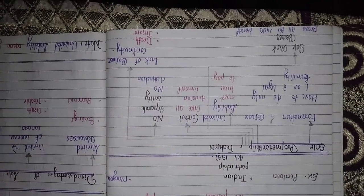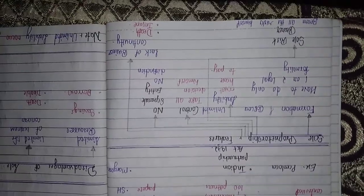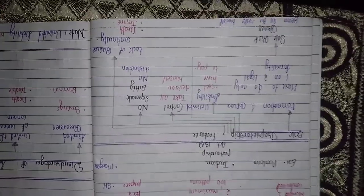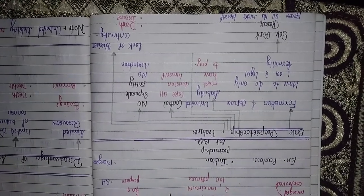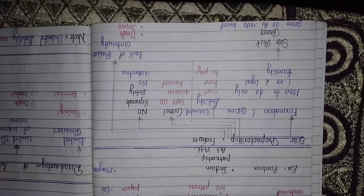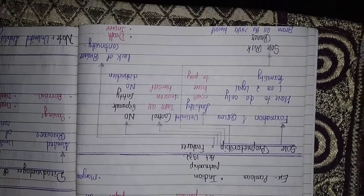So now we will discuss sole proprietorship in detail. We will talk about features. Feature means like 'visheshta.' Our first point is formation and closure.